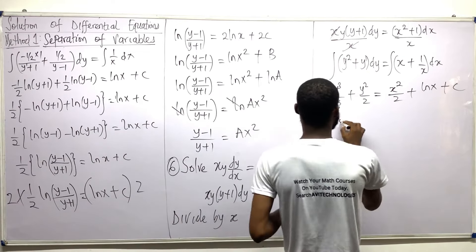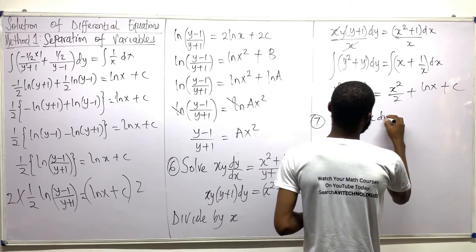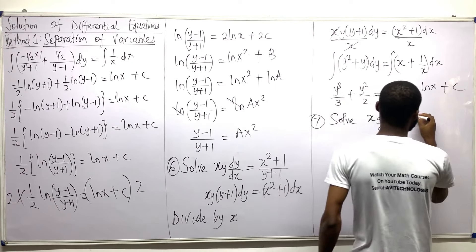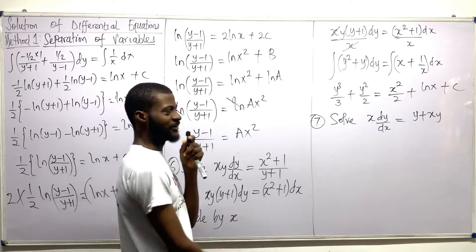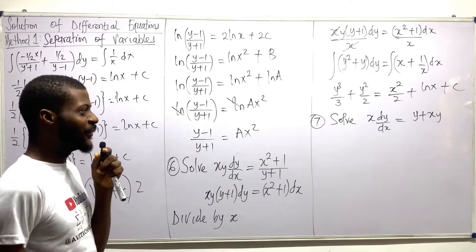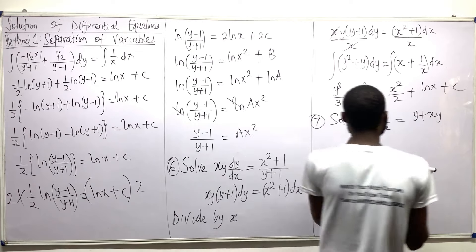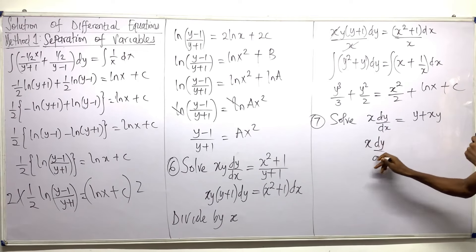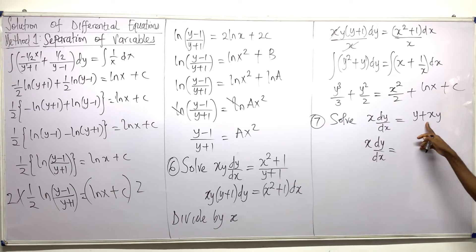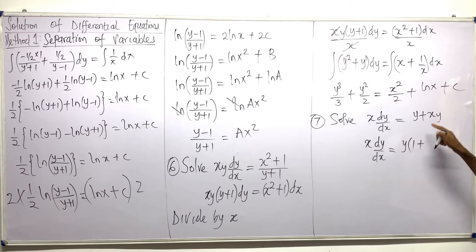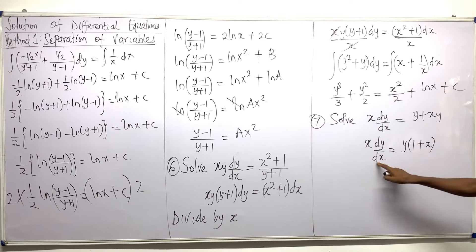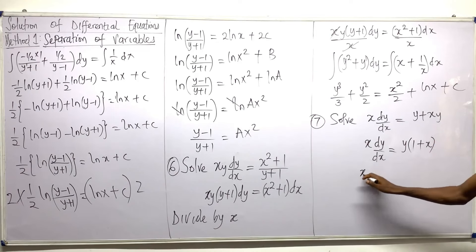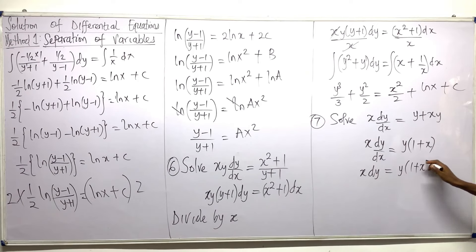So question 7. Here's question 7 — I'm asked to solve this very question. The first thing we're going to do is remember to separate x and y. So this will become x. I'm going to solve this. So this is x divided by x. I'm going to say that y is common here, so this is y into — y over y is 1, plus xy over y is x. The next thing I'm going to do is multiply by dx. So this is x dy equal y into 1 plus x dx.